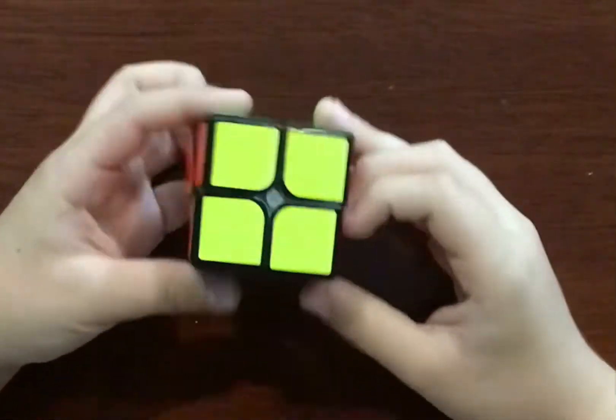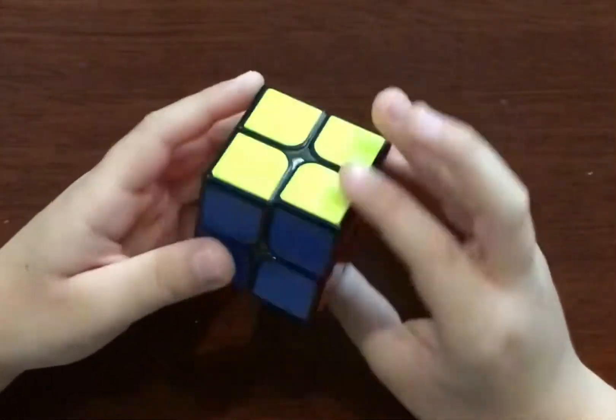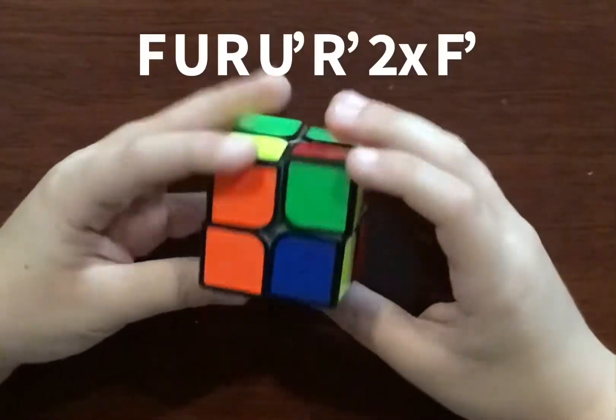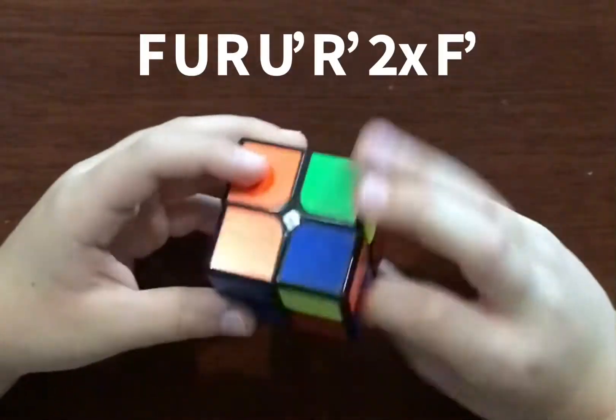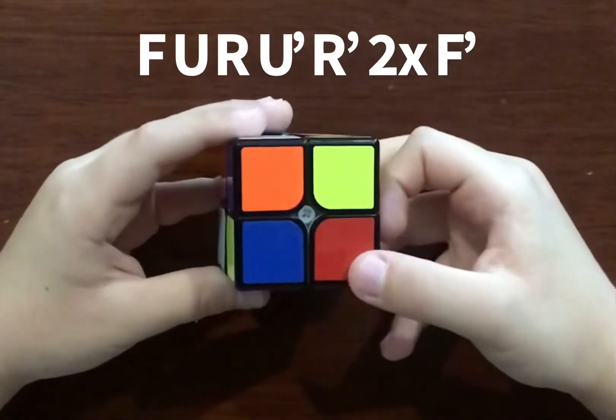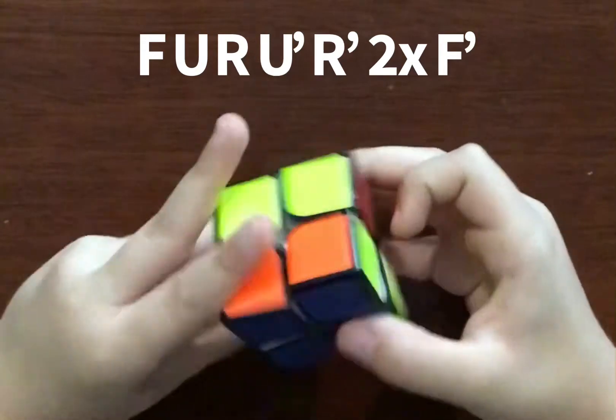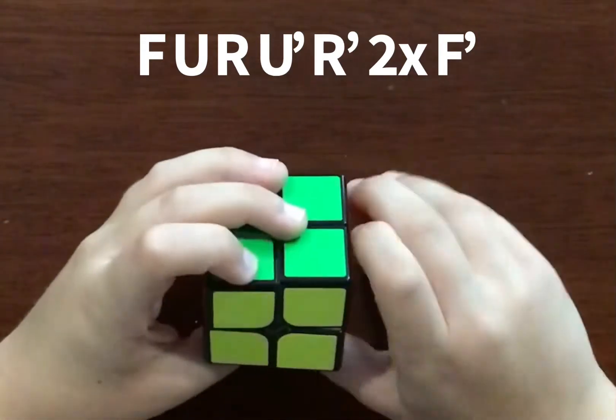Sometimes you might have this case. This is what you do: you make this face that way, you do F, U, R, U prime, R prime, U, R, U prime, R prime, and you solve the yellow face.